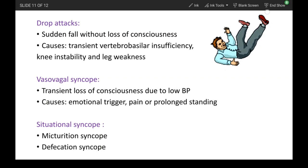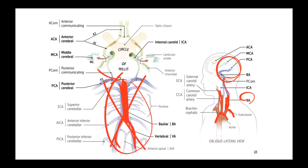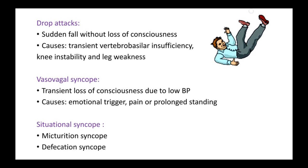The main reason for drop attacks is transient vertebro-basilar insufficiency. Here we can see the arch of the aorta, with the common carotid artery going up and the vertebral artery arising from the subclavian artery. The vertebral artery goes up and supplies the posterior part of the brain, eventually giving off the basilar artery. If there is insufficiency in this vertebro-basilar system, there is less blood going to the circle of Willis and the posterior brain, causing falls.